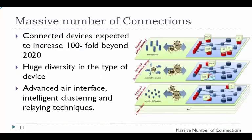The next challenge is the massive number of connections. Due to diversity in the type of devices, the challenge is to support service requirements in an efficient manner. Techniques like intelligent clustering and relaying can be used to support hyper-connectivity. For instance, one device can act as a gateway to aggregate traffic, thereby reducing signaling load on the network.